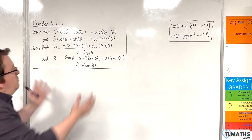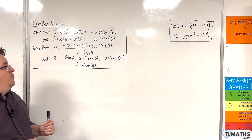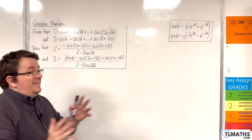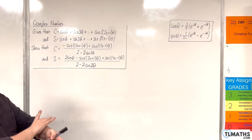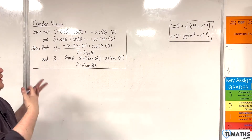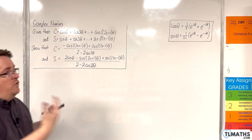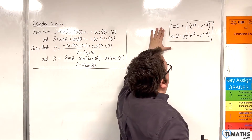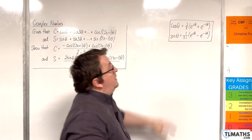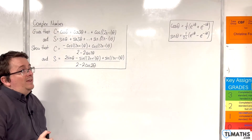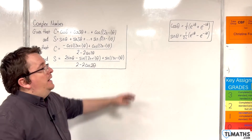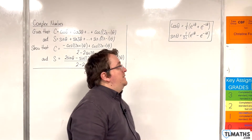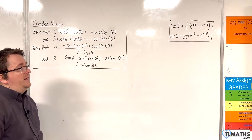That's what we need to show. It looks absolutely horrific but as we work through it, it's not too bad once you get used to the rhythm of this type of question. We also have that cosine θ = ½(e^(iθ) + e^(−iθ)) and sine θ = (1/2i)(e^(iθ) − e^(−iθ)).